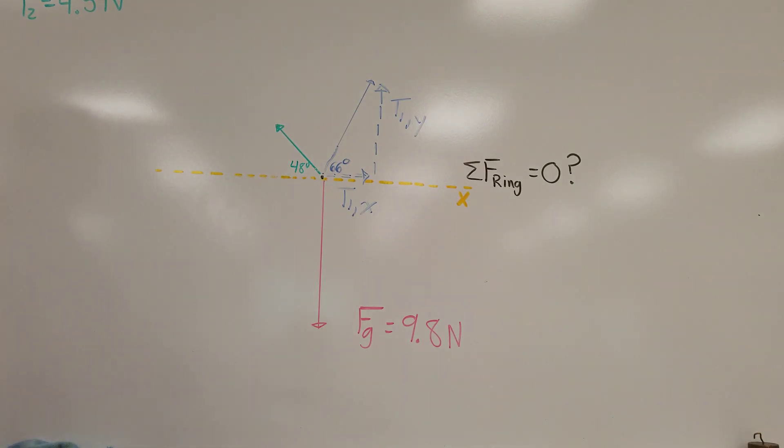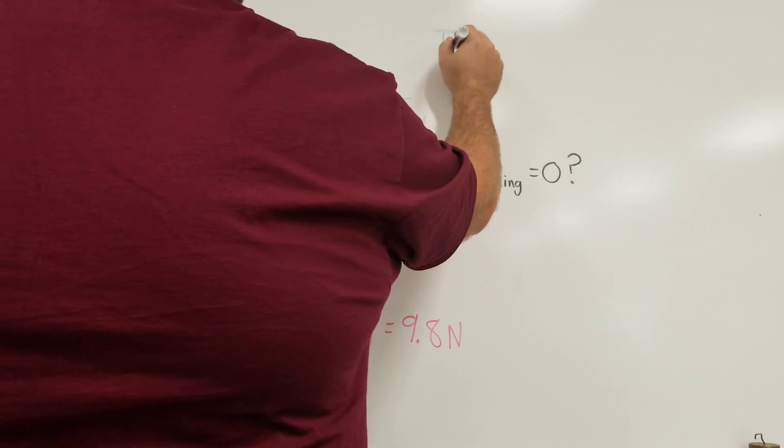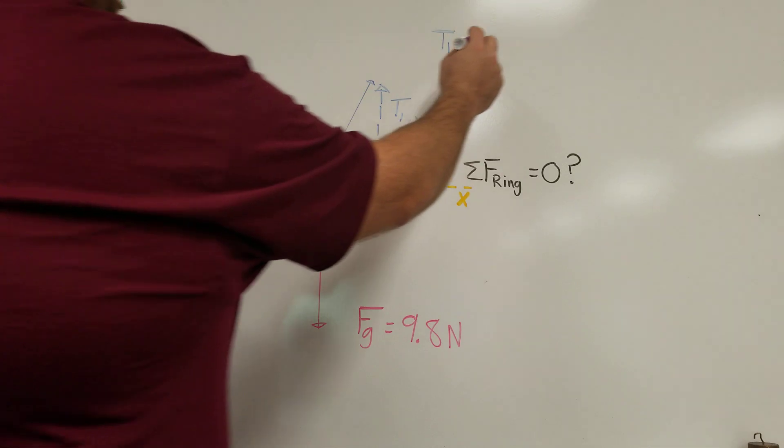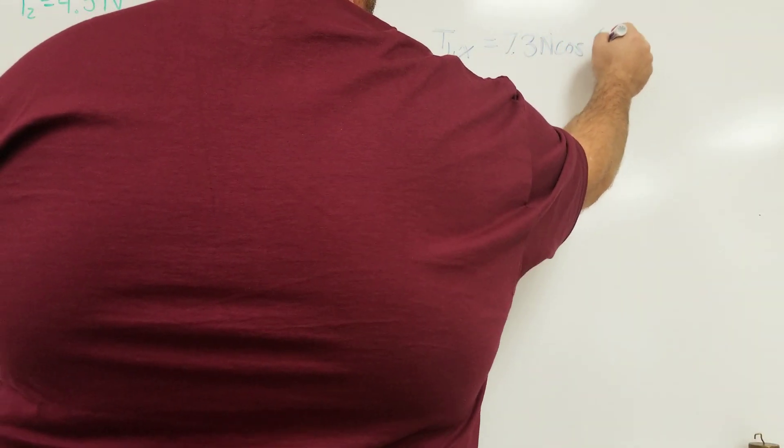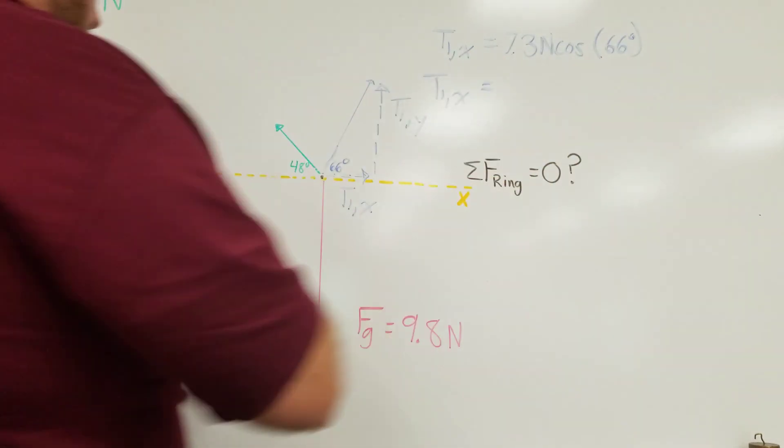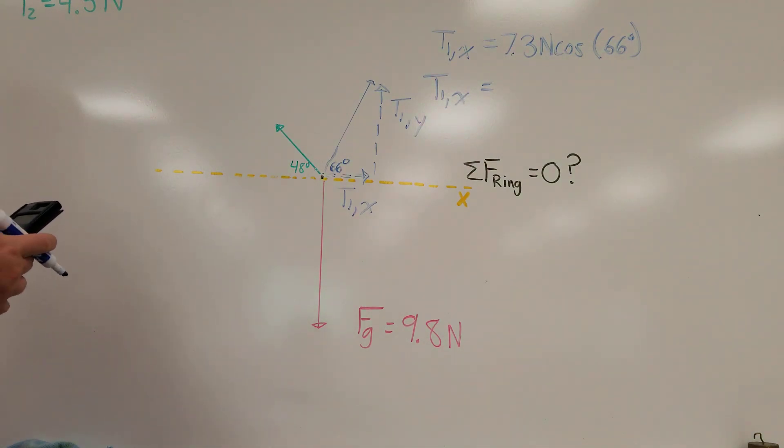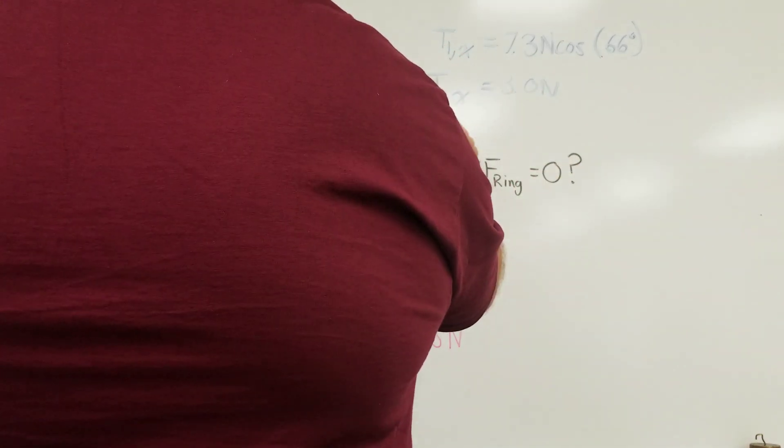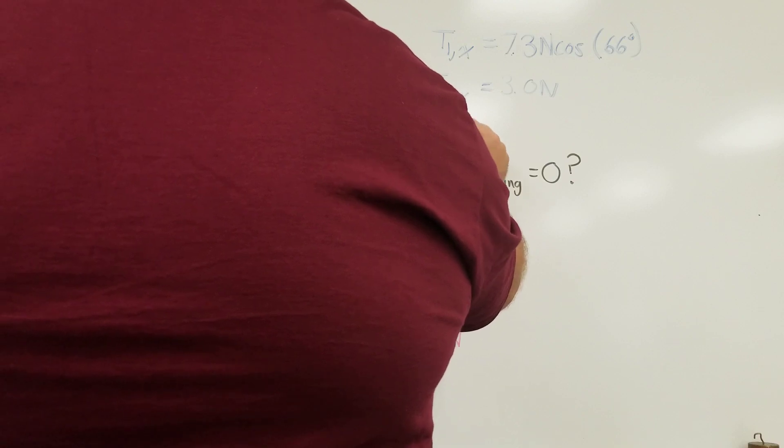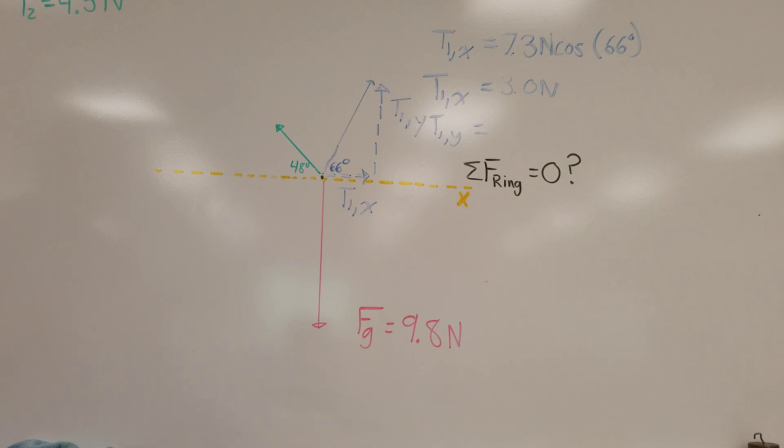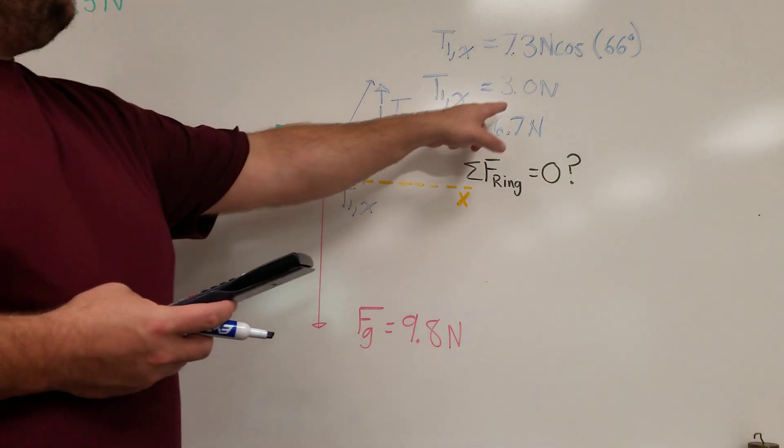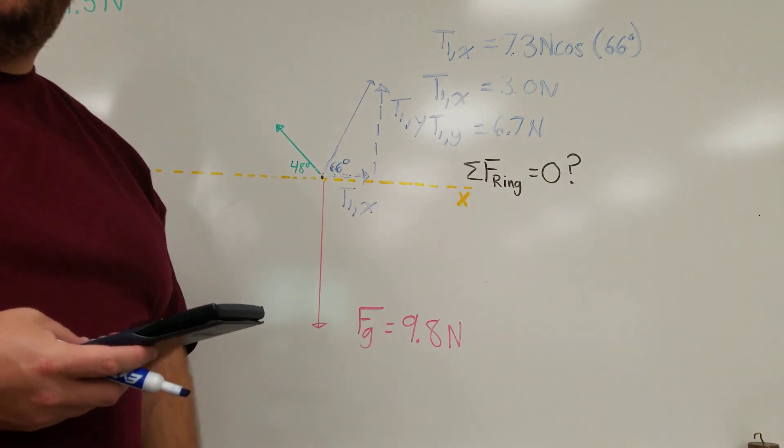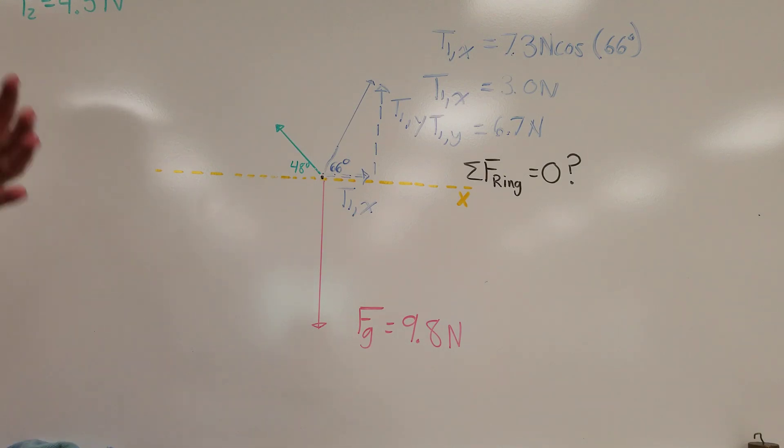So if I can figure out what these dash lines are using a little bit of trigonometry, then I can ignore that solid line and just work with the two dash lines. So doing some real quick trigonometry, T1,X, the X component, would be 7.3 Newtons times the cosine of 66 degrees. T1,X then would be 7.3 cosine 66, something like 3 Newtons. And then the Y component, I can use the sine function to do that. And I get like 6.7 when I do that. If you wanted to check yourself, you could do Pythagorean's theorem and do 3 squared plus 6.7 squared, and it should add up to 7.3 squared.